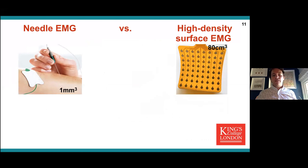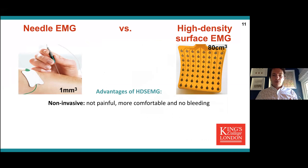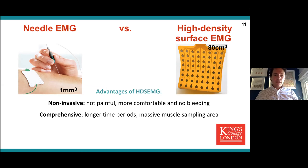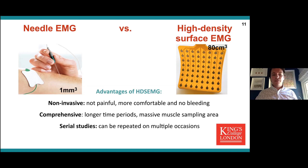How can we detect motor unit activity? The traditional method is through needle EMG, and a more modern method I'm going to focus on today is high density surface EMG. The advantages that attracted us as clinicians and researchers: it's non-invasive, therefore not painful, more comfortable for patients, does not induce any bleeding. You get a more comprehensive assessment with longer time periods because patients tolerate it much better.